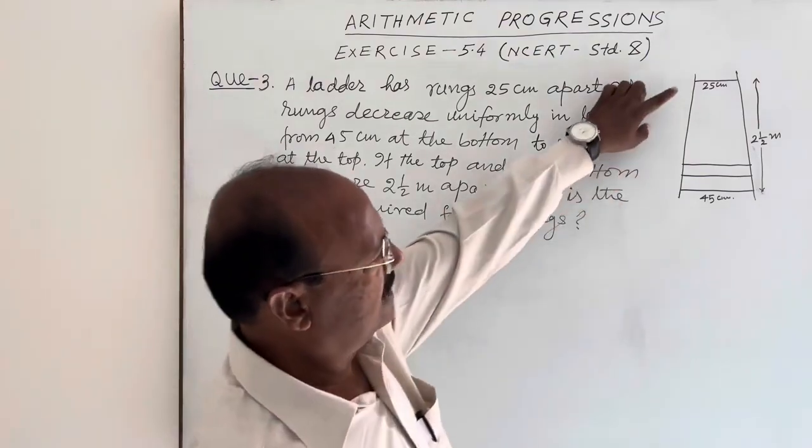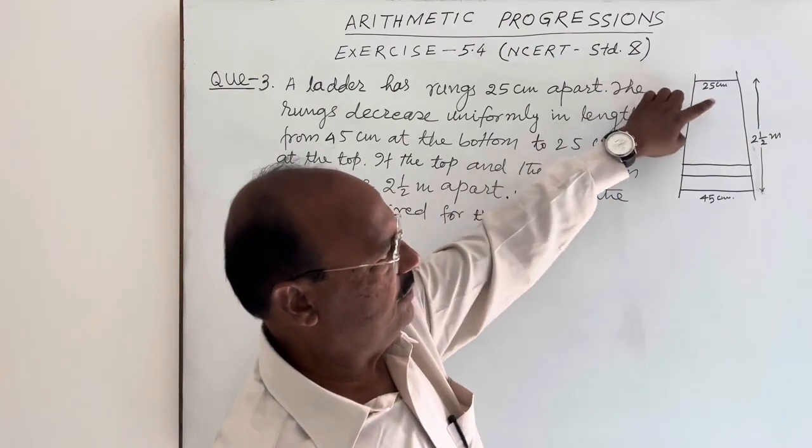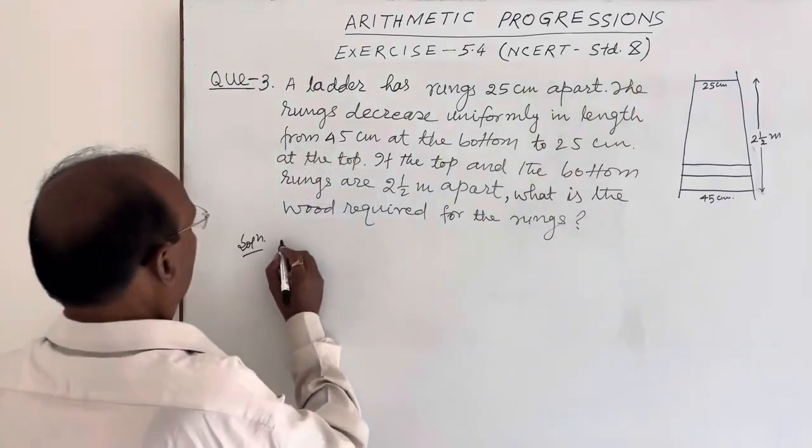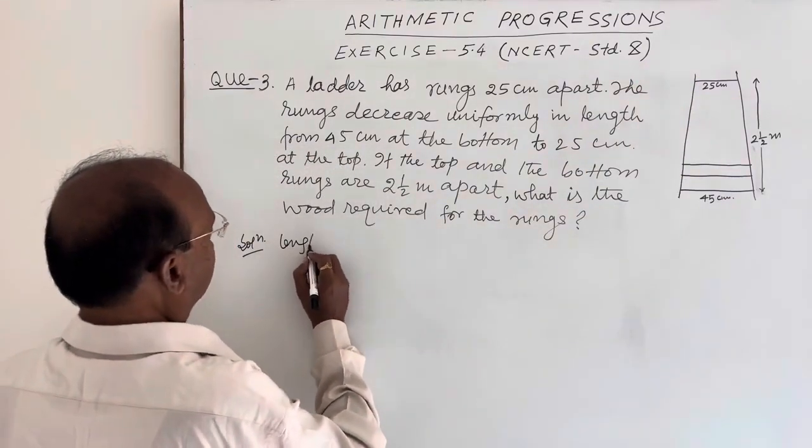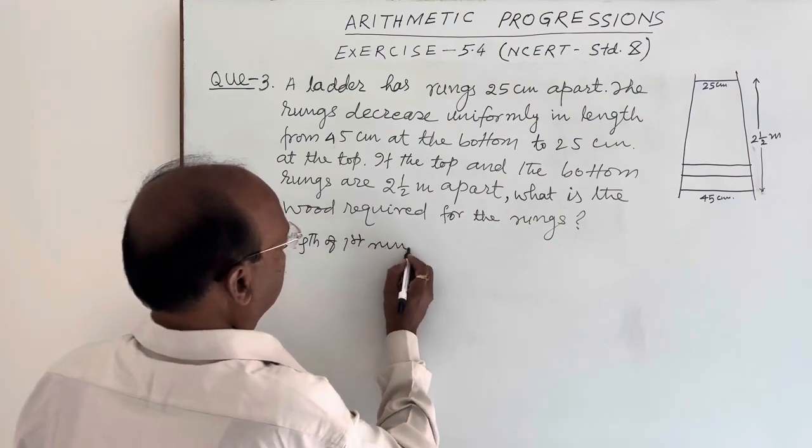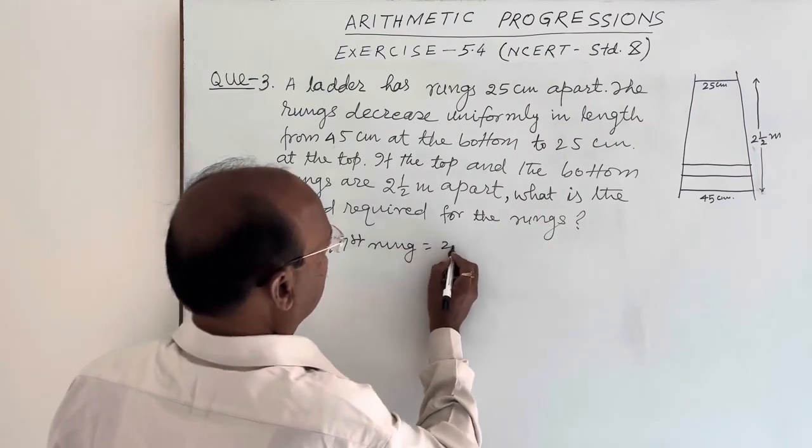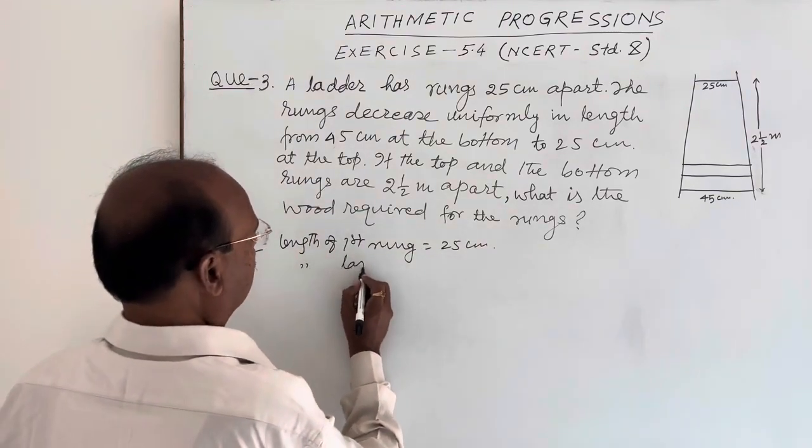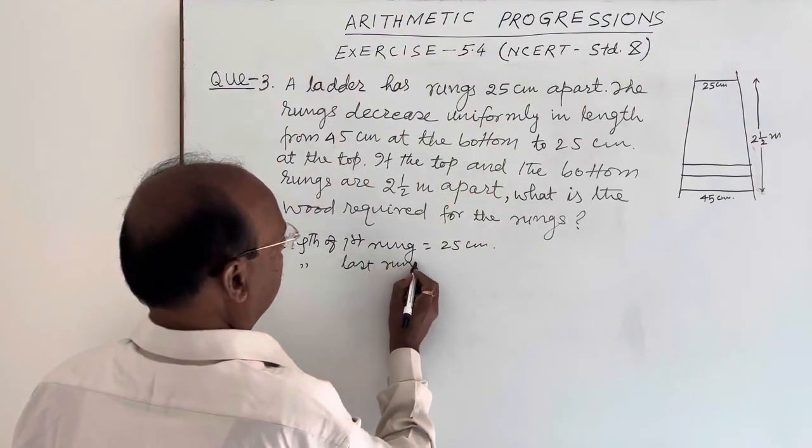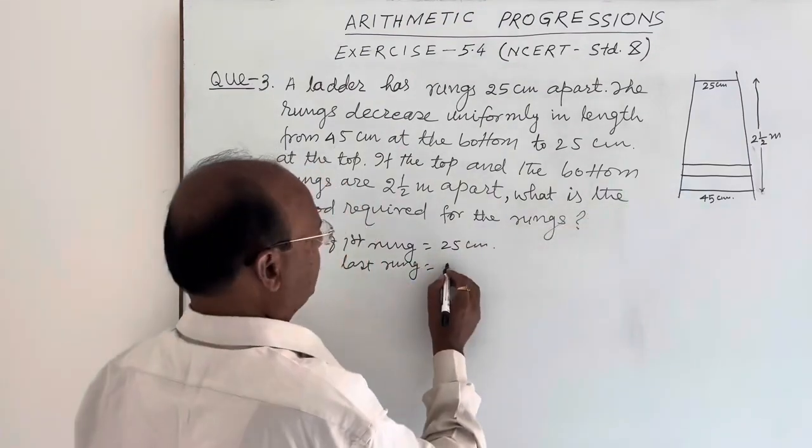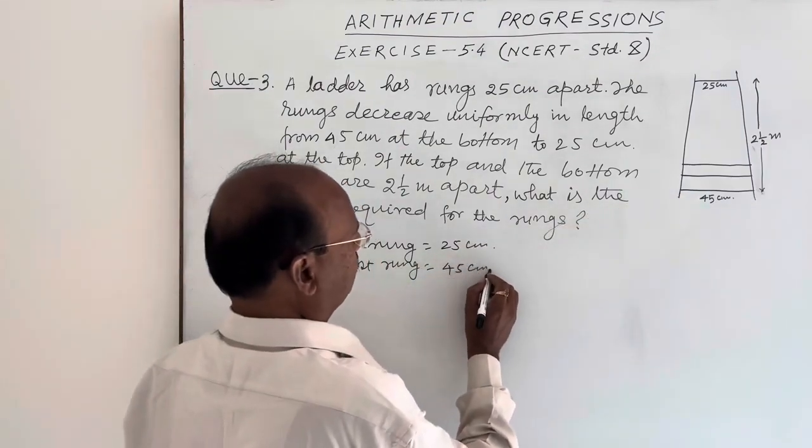Let us call this rung with length 25 cm as the first rung. So length of first rung is equal to 25 cm and length of last rung at the bottom is 45 cm.